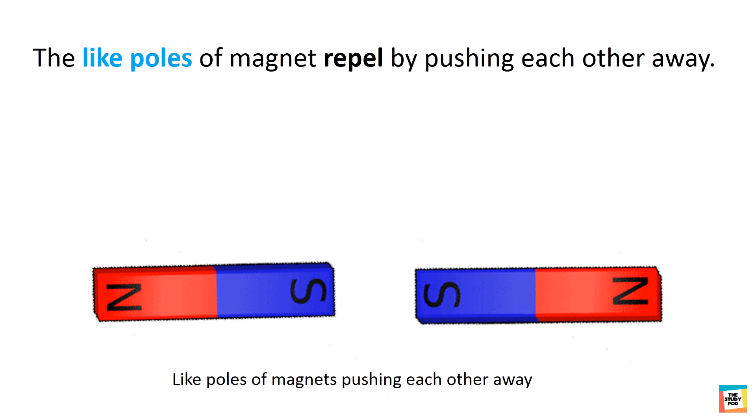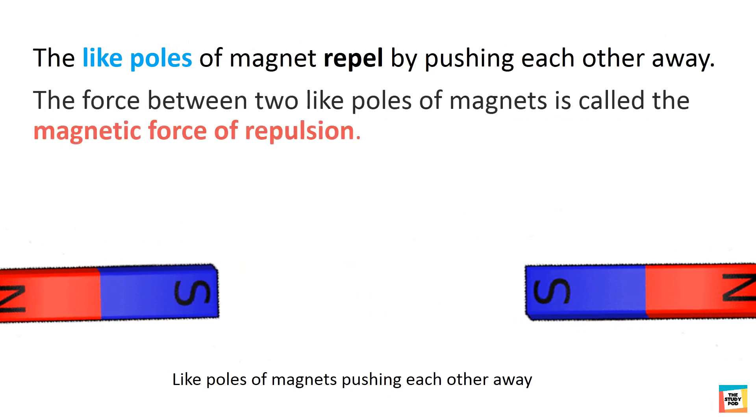The like poles of magnets repel by pushing each other away. The force between two like poles of magnets is called the magnetic force of repulsion.